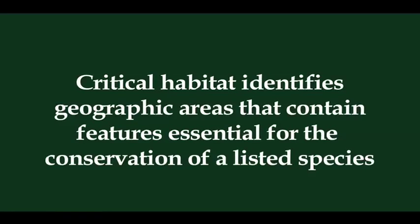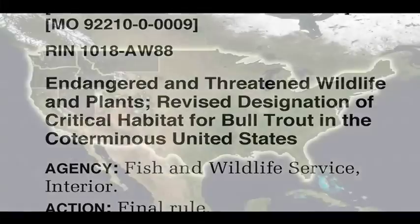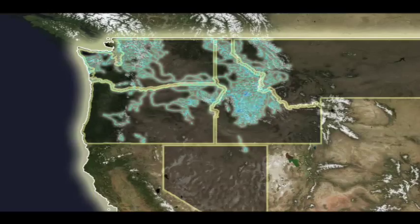After we listed bull trout, a requirement of the Endangered Species Act is to designate critical habitat. To identify those areas essential to the conservation of bull trout, we worked with our state and federal agencies, tribal partners, other conservation agencies, and private landowners to get their input and provide the latest information on bull trout. In October 2010, we designated critical habitat in Oregon, Washington, Idaho, Montana, and Nevada.